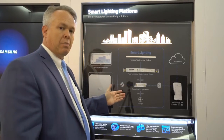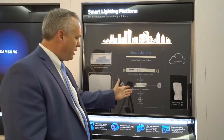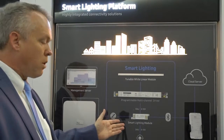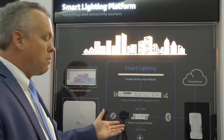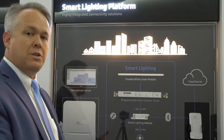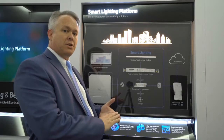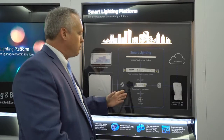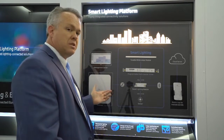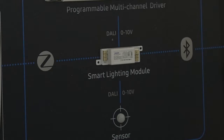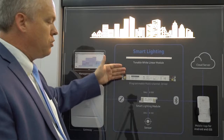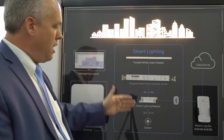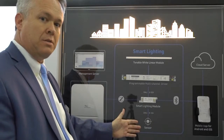The Smart Lighting Platform primarily consists of the Smart Lighting Module. This module integrates our processor, memory, and storage capabilities to provide Zigbee, Bluetooth, DALI, and 0-10 interfaces to drivers and sensor technology.